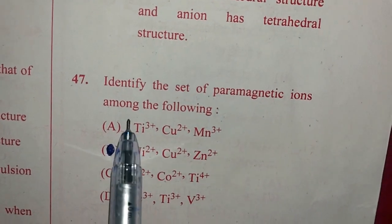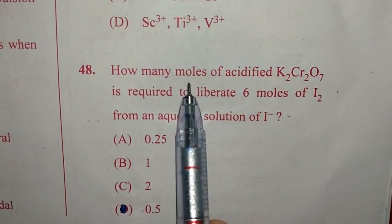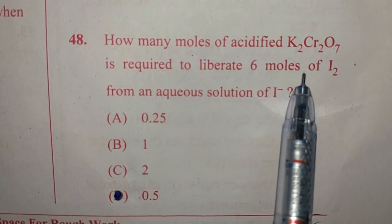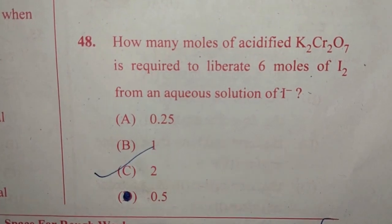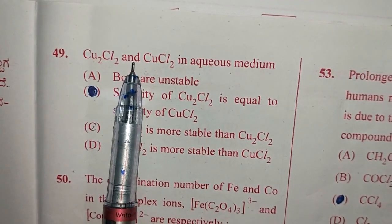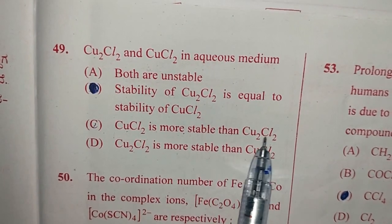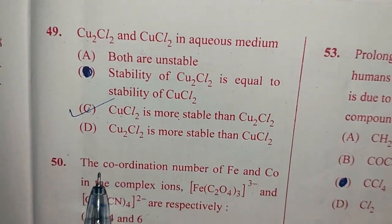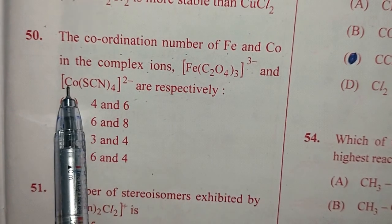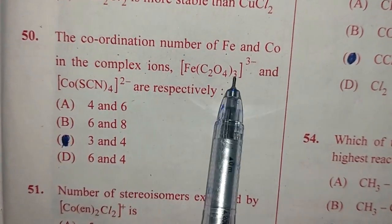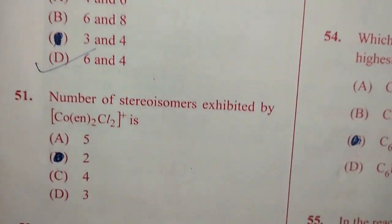Question number 47. Identify the set of paramagnetic ions among the following. The one which contains unpaired electron is paramagnetic, option A. Question 48. How many moles of acidified K2Cr2O7 is required to liberate 6 moles of I2 from aqueous solution of I-? The answer is option C, 2. Question number 49. Cu2Cl2 and CuCl2 in aqueous medium. Answer for this is option C. CuCl2 is more stable than Cu2Cl2. Question number 50. The coordination number of Fe and Co in the complex ion Fe(C2O4)3- and Co(SCN)4- are respectively. It is a bidentate ligand 6 bonds. This is a monodentate 4 bonds. So 6 and 4, option D.